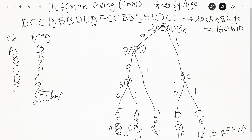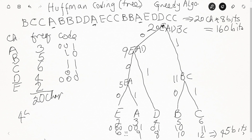The code for each character: A is 0-0-1, B is 1-0, C is 1-1, D is 0-1, and E is 0-0-0. When we add all these up we get 45 bits. The original would be 160 bits using 8-bit ASCII. So 45 out of 160 is about 28%, meaning we achieve roughly 72% savings — that's a significant compression.